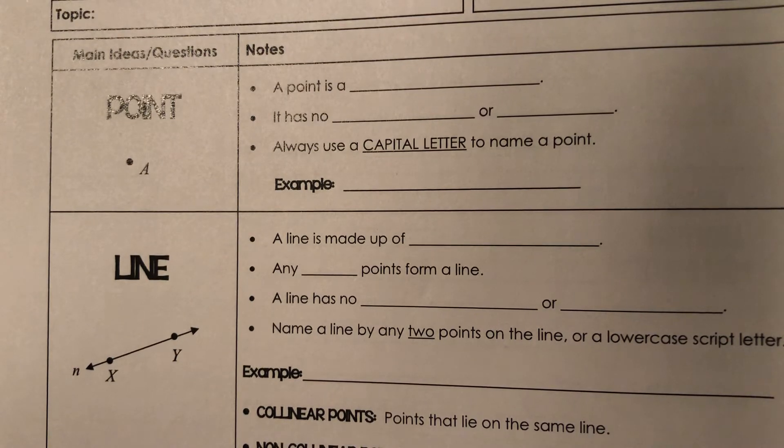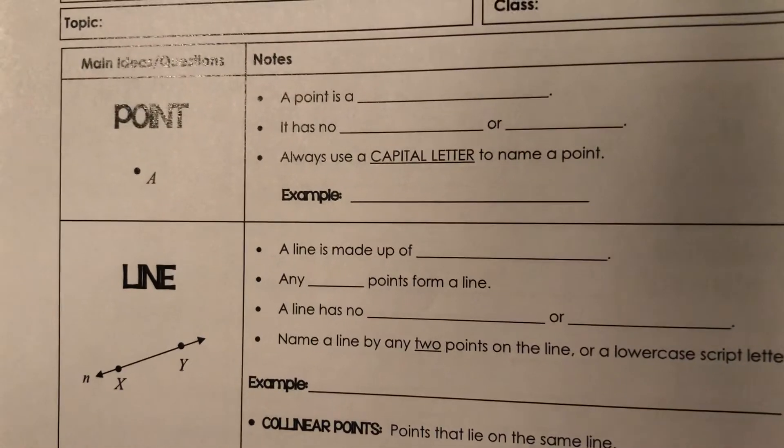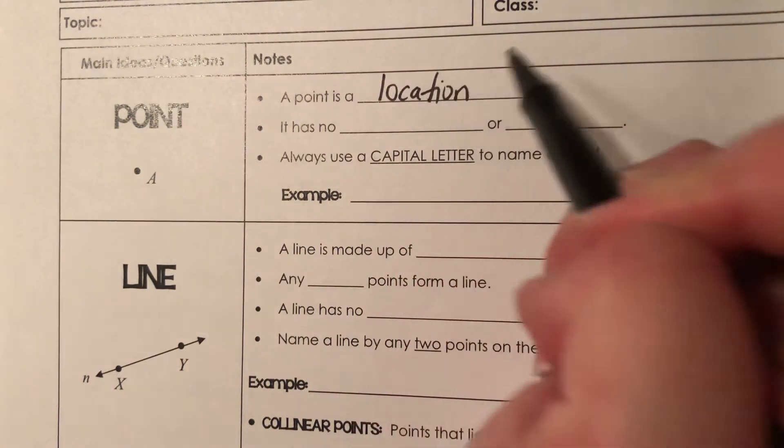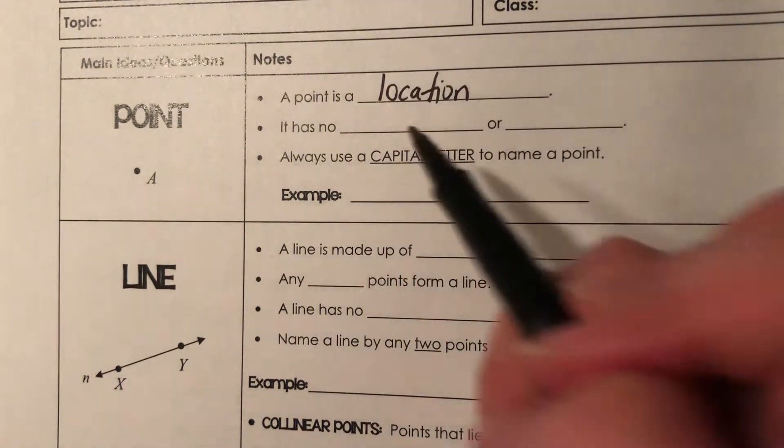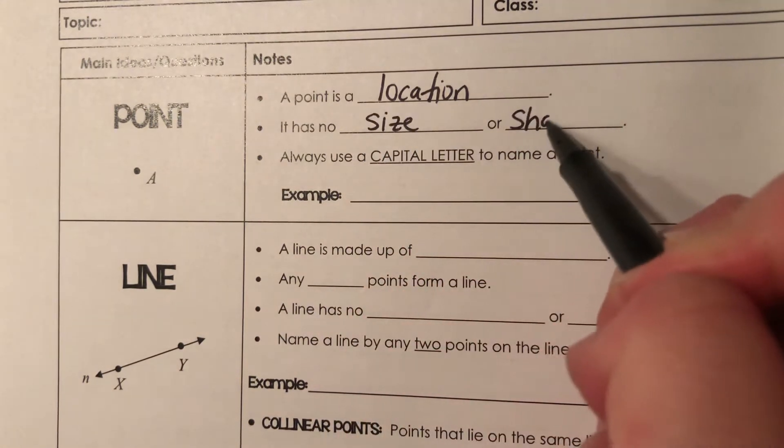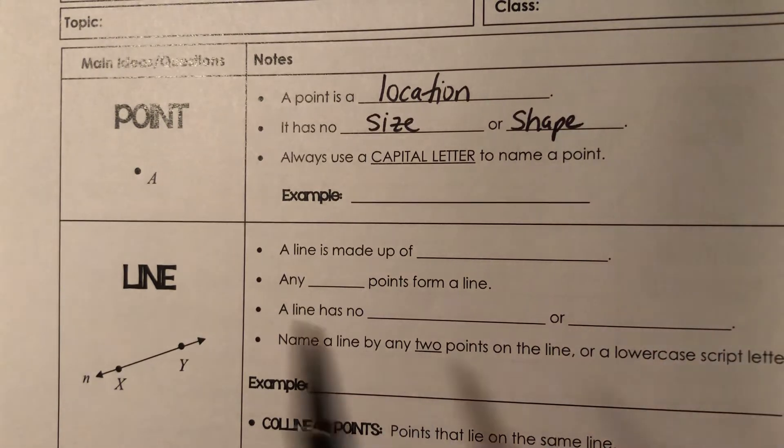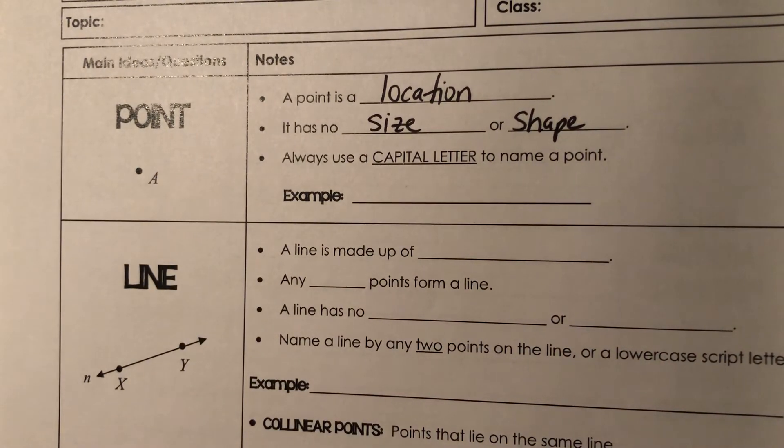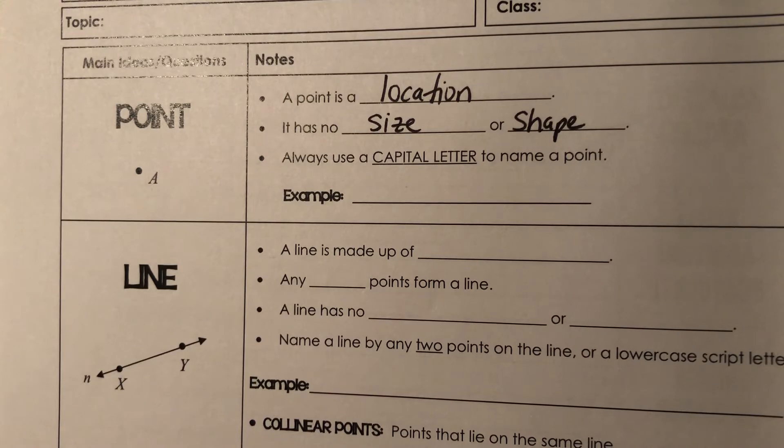So for a point, a point is a location. Okay. So it has no size or shape. Even though we're used to drawing it as little circular dots, it doesn't really actually have a size or shape. It's just a location in space.